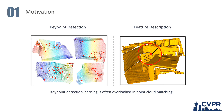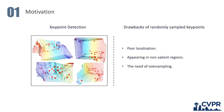The local key point detection and description serve as two key components for the point cloud registration task. However, most existing work often overlooks key point detection learning and instead randomly samples a set of points for feature descriptions. This strategy might suffer from several drawbacks, such as poor localization, appearing in non-salient regions, and the need for oversampling.